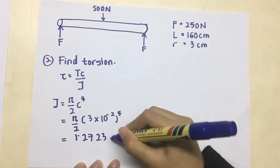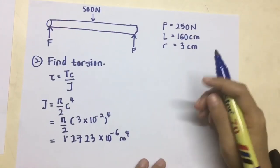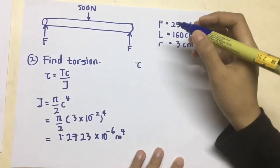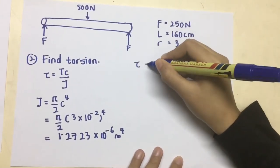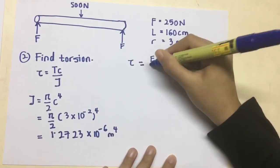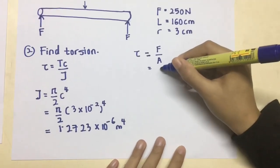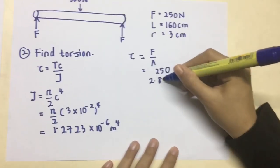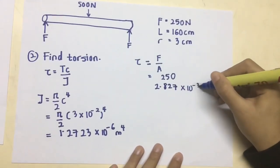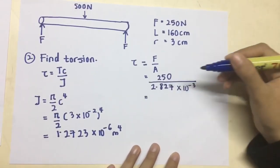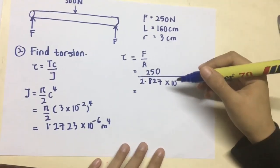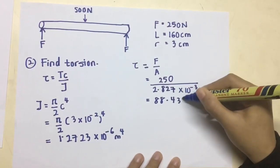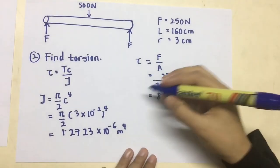And when you substitute the value of R, you get the 1.2723 times 10 to the power of negative 6 M4. So, using different formula of tau, which is F over A, F we get is 250 N area that is calculated earlier, so we can get 88 over 433 KPa.